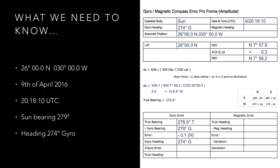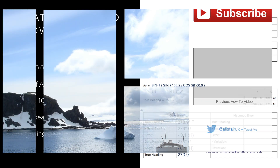To then calculate our true heading we take our gyro heading and apply the gyro error, which in this instance gives us a true heading of 273.9 degrees. If we were calculating the magnetic error we would continue as we have done previously and complete the table.